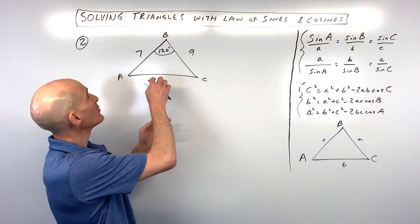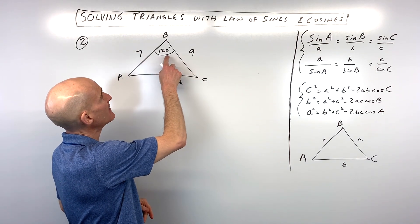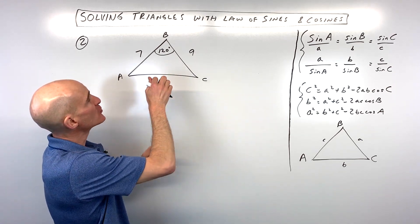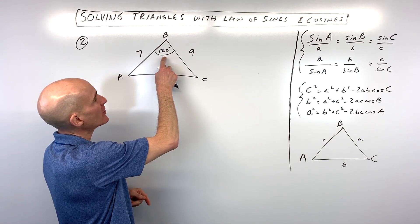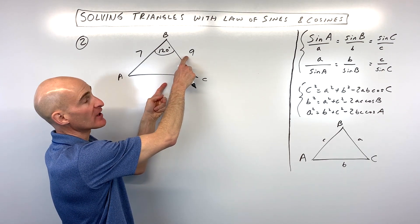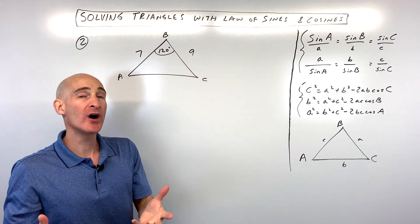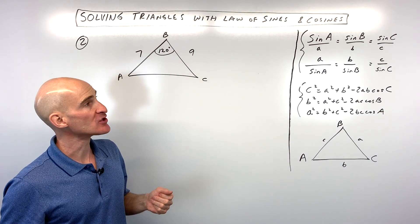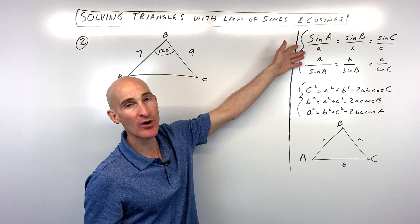Okay, example number two. We've got this side, this side, and the angle in between. Now, I want to point out something very important to you. If you try to do the law of sines, like sine of 120 degrees over side B, and then you try to do like the sine of angle A over like 9, you're going to have two unknowns, two variables, and you're not going to be able to solve that equation. So, we're not going to be able to use the law of sines on this problem.